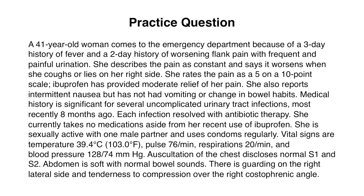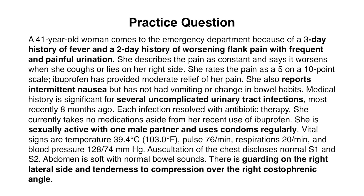There are a few key findings to keep in mind here. First, the onset and duration: acute onset of urinary symptoms with flank pain and systemic signs like fever over three days. She's also having nausea and has a history of several UTIs. She's sexually active with one partner and uses condoms regularly — this is key because it reduces the likelihood of a pelvic inflammatory disease process. On physical examination, right-sided CVA tenderness is the key finding.